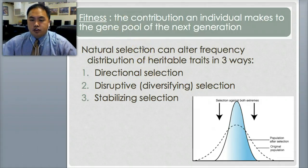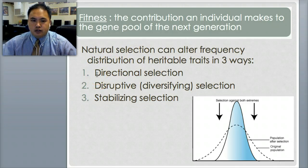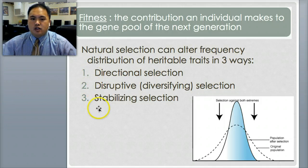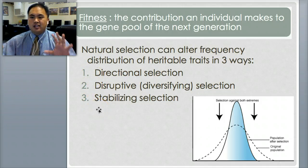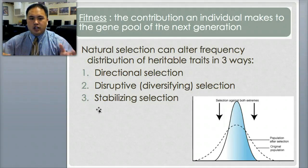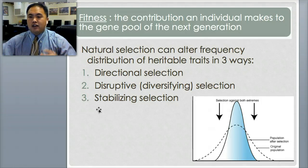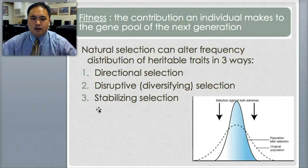Natural selection can alter allele frequencies in three ways. One is called directional, the second is called disruptive or diversifying, and the last one is called stabilizing. All you need to know in this section are these three things: directional, disruptive, and stabilizing. If I give you a random scenario, you should know which one we're talking about.